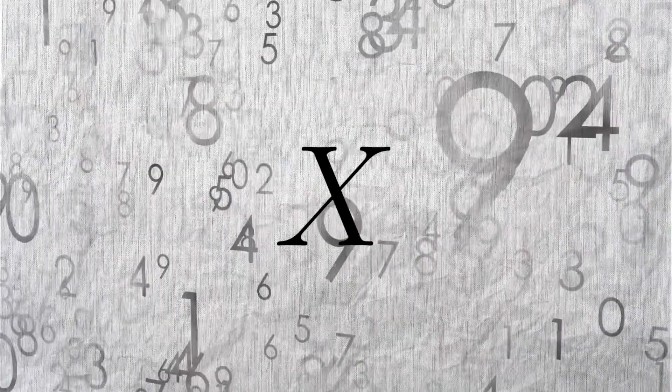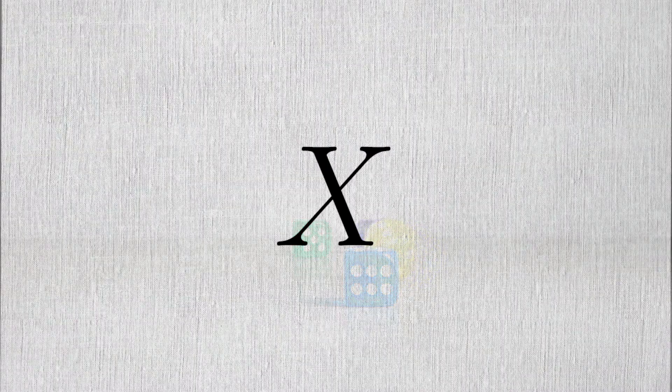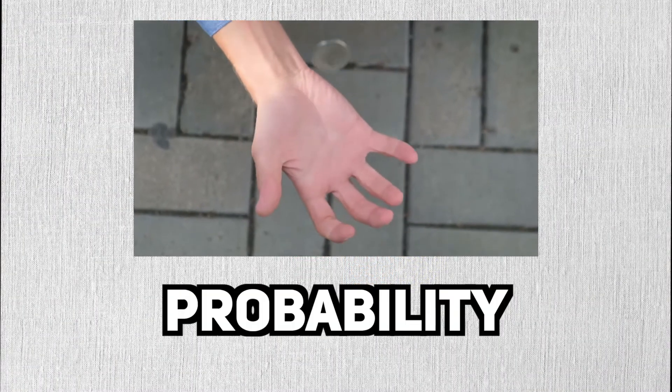A random variable is variable because it can take on possibly many different values, and it is random because we can't predict what that value might be in advance. This is why probability is important through statistics.